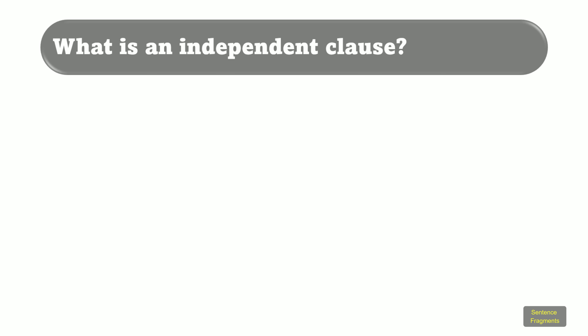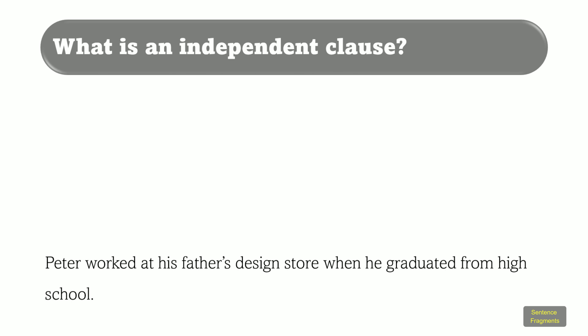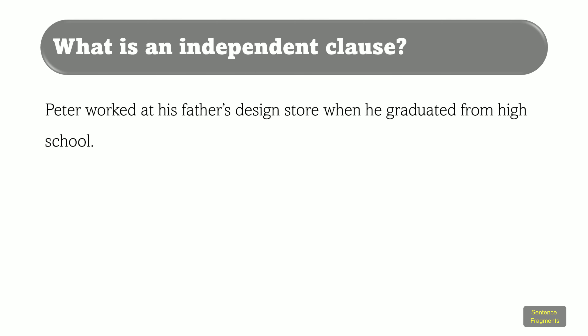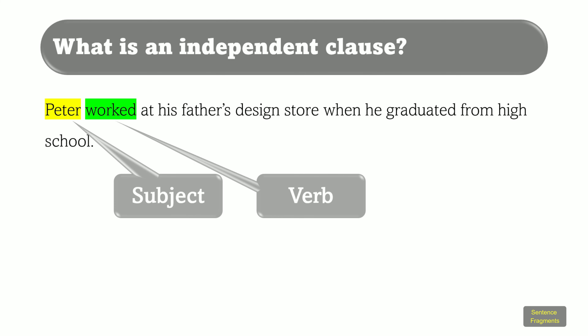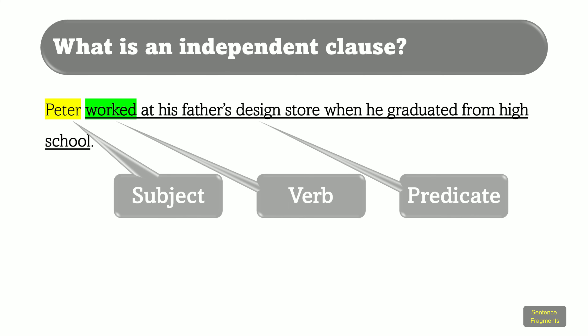Let's have another example to illustrate this point. See the sentence: Peter worked at his father's design store when he graduated from high school. In this case, Peter is the subject of the sentence because he's the one performing the action. Worked is the verb and it is in the past tense, and the verb worked, together with the rest of the sentence, makes up the predicate: worked at his father's design store when he graduated from high school.